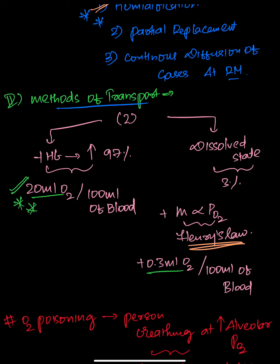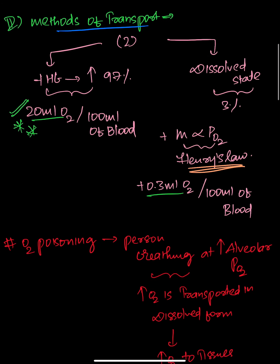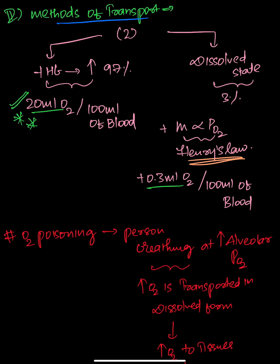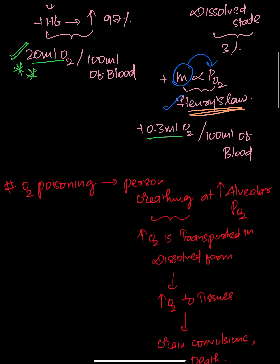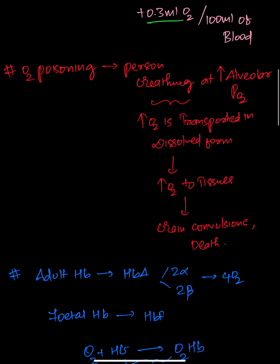The major amount of oxygen is transported by combining with hemoglobin as oxyhemoglobin — that is, 20 ml of oxygen is transported by 100 ml of blood. In the dissolved state, only a small amount is transported. The dissolved state follows Henry's law: the amount of oxygen dissolved is directly proportional to the partial pressure of oxygen, and therefore only 0.3 ml of oxygen is transported by 100 ml of blood.